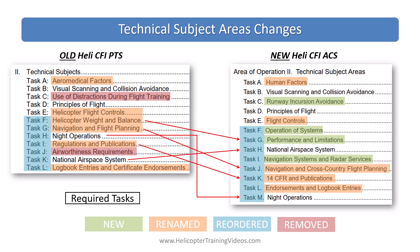Night operations remains the same name but is now put at the end of the list. Regulations and publications was renamed to 14 CFR and publications. National airspace was moved up; logbook entries and certificate endorsements moved down and renamed to endorsements and logbook entries. Airworthiness requirements was removed from this area of operation into the pre-flight preparation area of operation. The required tasks have also changed: in the PTS it used to be Task L plus one other; now it's Task L and Task C and at least one other, so you now have at least three tasks in this area of operation.